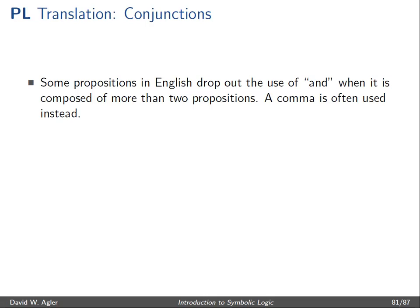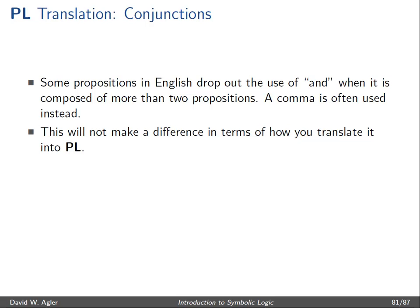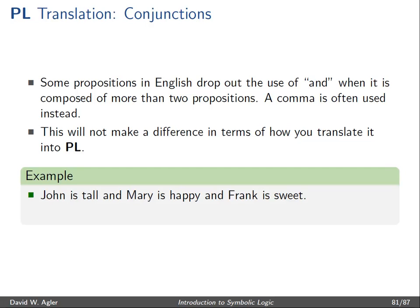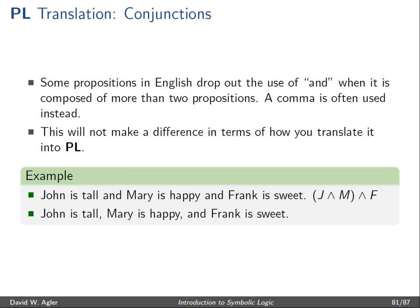One thing to note is that some propositions in English often don't make use of multiple explicit 'and's. Sometimes a comma is used instead, dropping some instances of 'and'. This won't make a difference for how you translate it, whether the 'and' is present or not. So 'John is tall and Mary is happy and Frank is sweet' gets translated as J ∧ M ∧ F, and the same sentence with one 'and' dropped — 'John is tall, Mary is happy and Frank is sweet' — translates the same way.